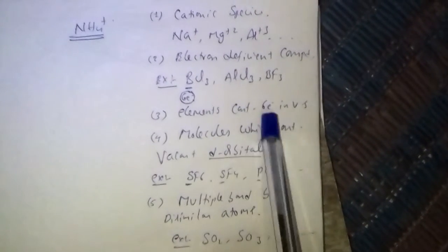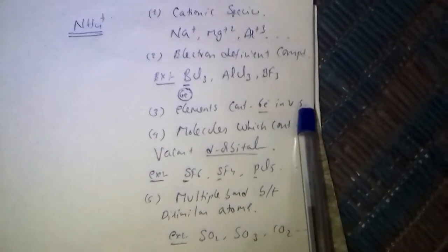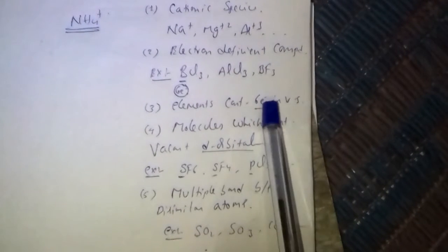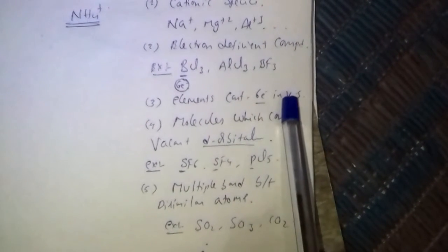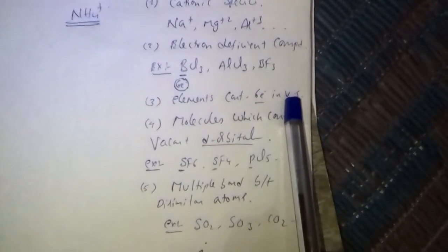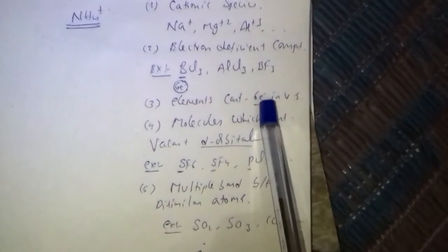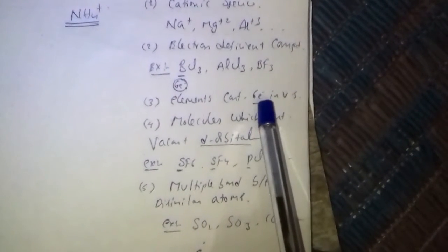Elements which contain 6 electrons in the valence shell, i.e. Group 6A elements — oxygen, sulphur, selenium, tellurium — accept lone pairs of electrons to complete their octet and act as Lewis acids.